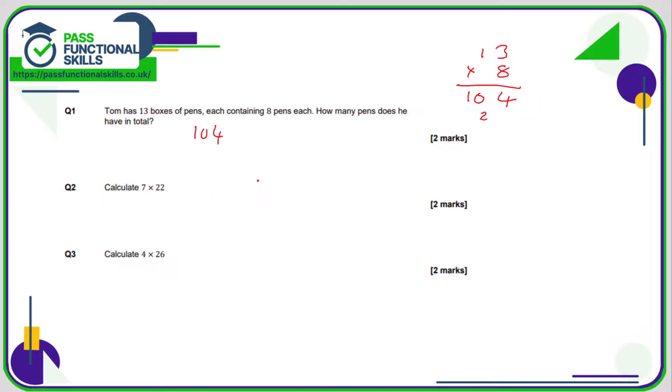7 times 22. Again, I would use a written method, 22 times by 7. I'd set it out like this. 7 2's are 14, 4 carry the 1, 2 7's are still 14, plus the 1 is 15, so that comes to a total of 154.